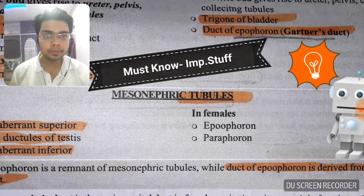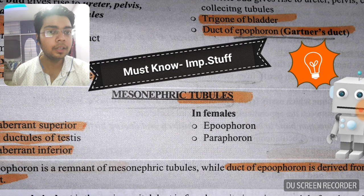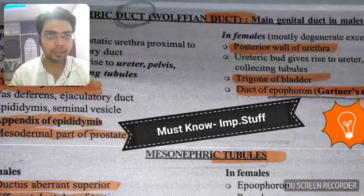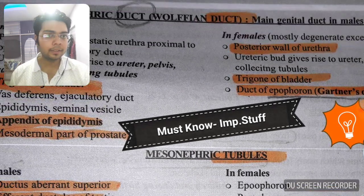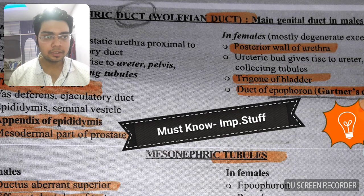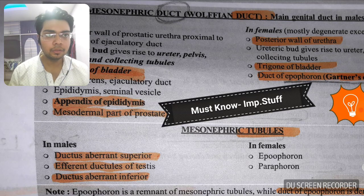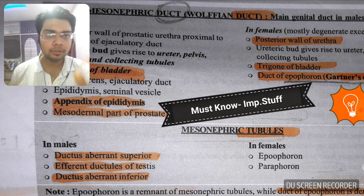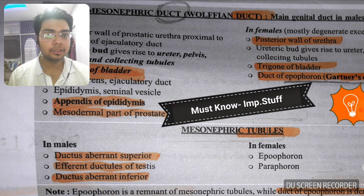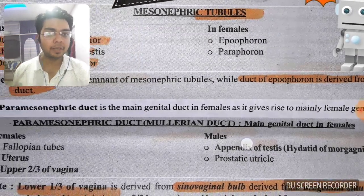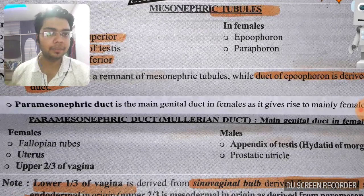If they ask about the epoophoron itself, it develops from the mesonephric tubules. The epoophoron and paroophoron develop from mesonephric tubules, while the duct of epoophoron — Gartner's duct — develops from the mesonephric duct. To summarize: from the mesonephric (Wolffian) duct, the appendix of epididymis develops in males, while the appendix of testis (hydatid of Morgagni) develops from the paramesonephric duct.